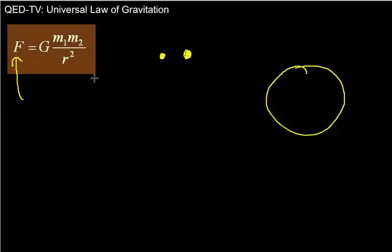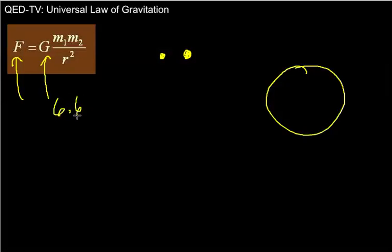The way we calculate that force is to use this equation. The force between any two objects is equal to G, the Universal Gravitational Constant — a constant Newton found was necessary so that the force would always be calculated correctly. That constant is 6.67 times 10 to the minus 11. You'll need to remember that constant.